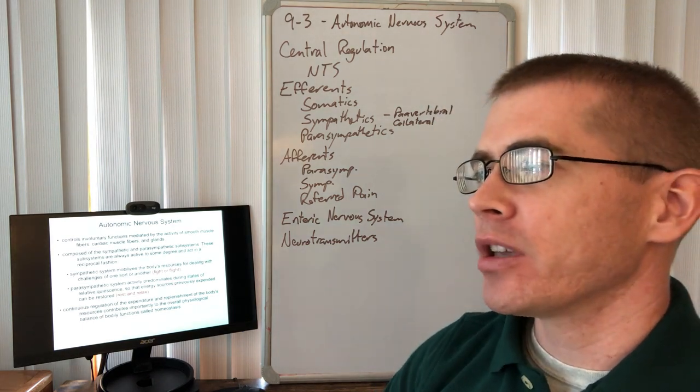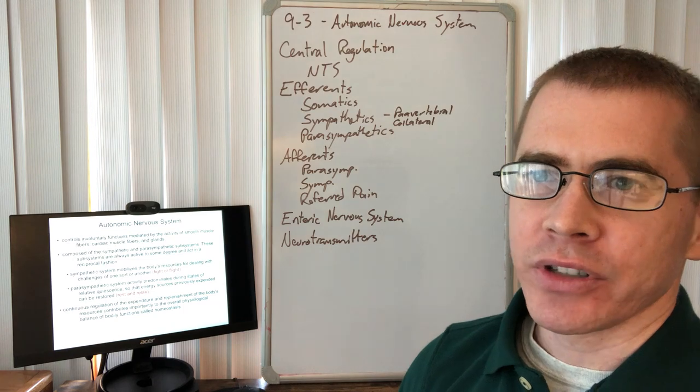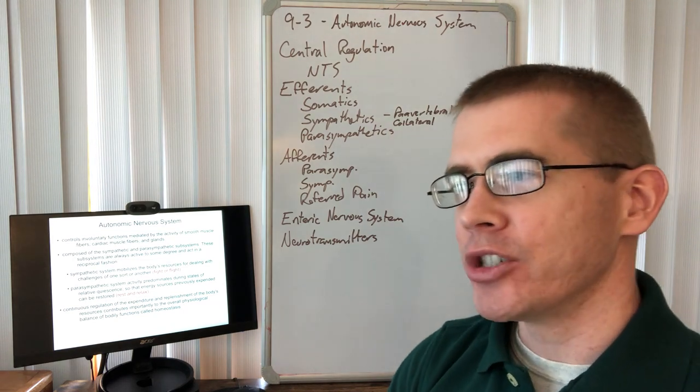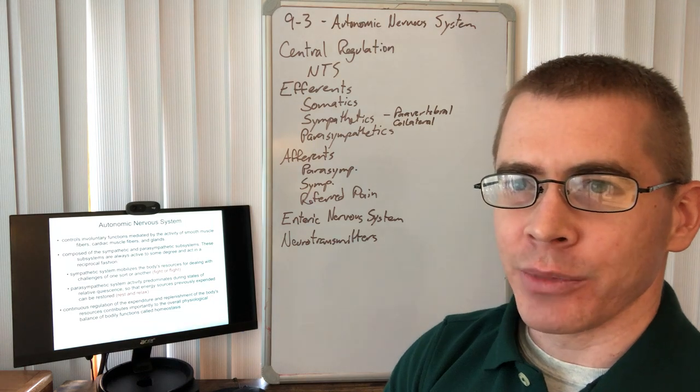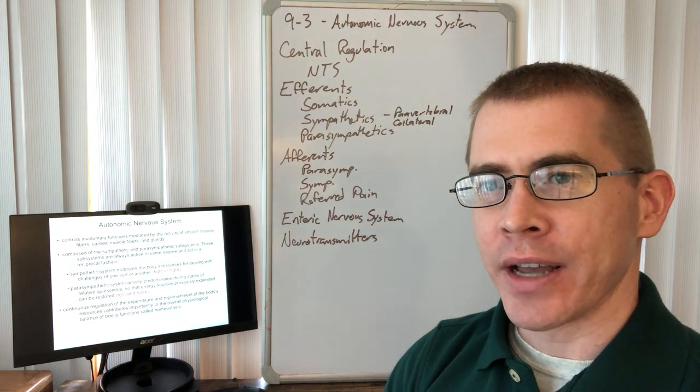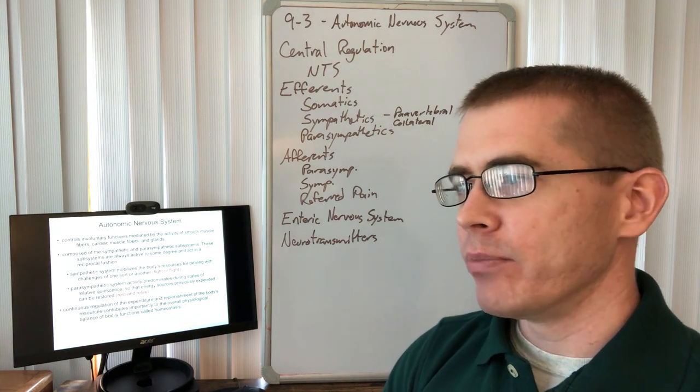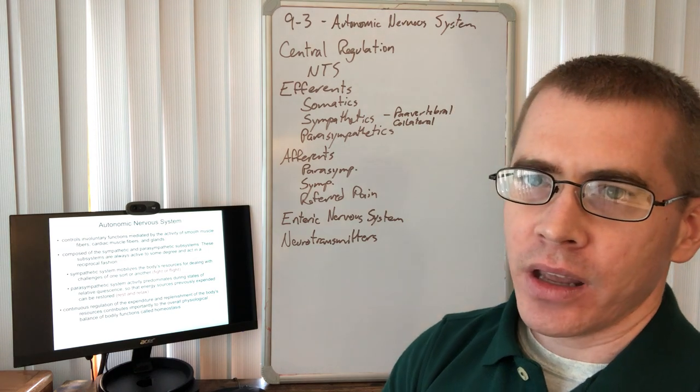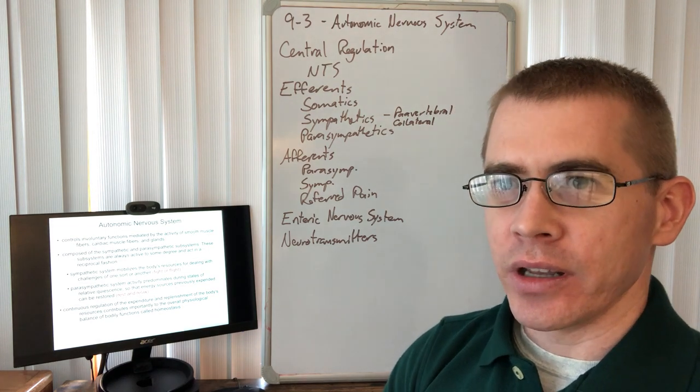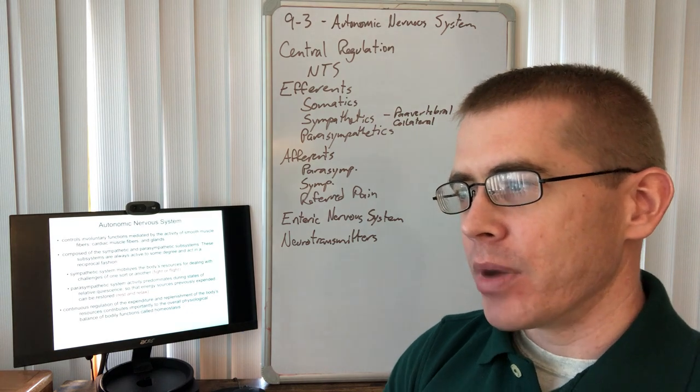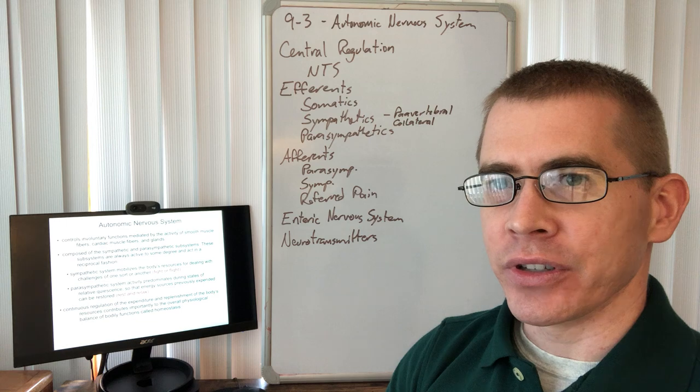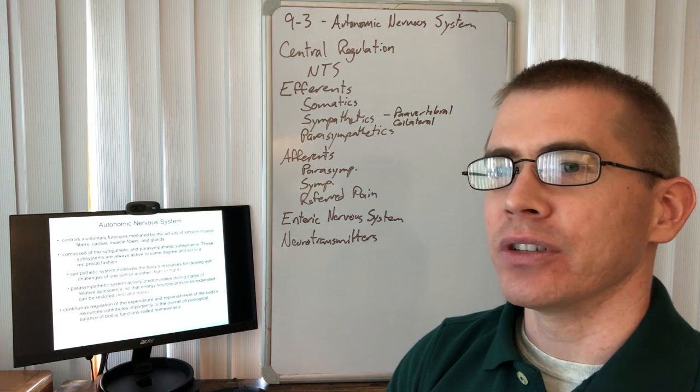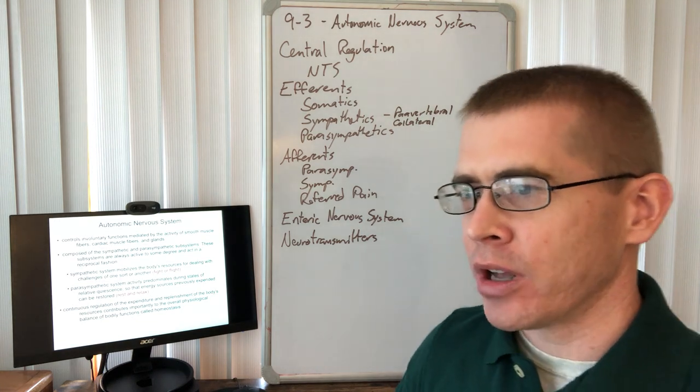In this lecture, we're going to be talking more in depth about the autonomic nervous system, its regulation, whatnot. We've mentioned briefly in the past the sympathetic nervous system in relation to the IML in the thoracic spinal cord. We've mentioned the parasympathetics in the cranial nerves, in the brainstem, but there's lots of things we still don't know about how the autonomic nervous system acts and receives its information. So that's what we'll talk about this time.